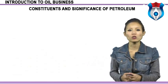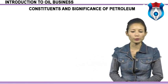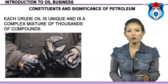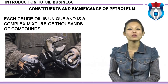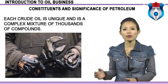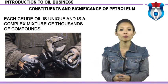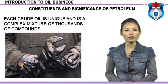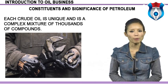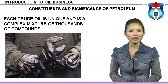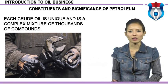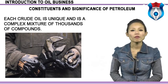Moving on, we will study the constituents and significance of petroleum. Each crude oil is unique and is a complex mixture of thousands of compounds. Most of the compounds in crude oil are hydrocarbons — organic compounds composed of carbon and hydrogen atoms. Other compounds in crude oil contain not only carbon and hydrogen but also small but important amounts of other hetero elements, most notably sulfur, as well as nitrogen and certain metals such as nickel and vanadium.